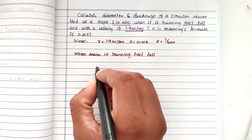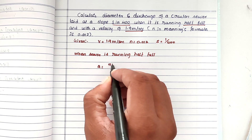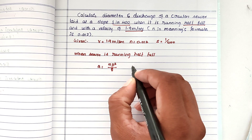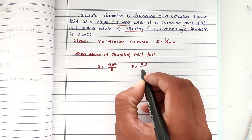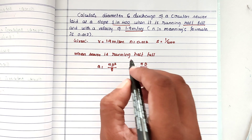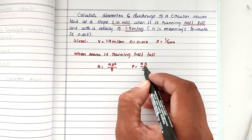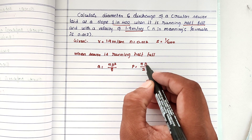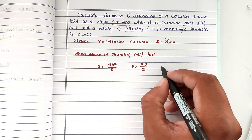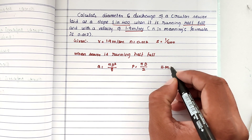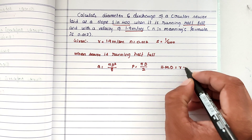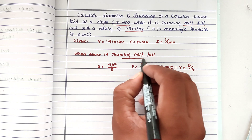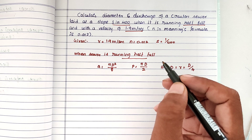For a circular sewer running half full, the area of section A = πd²/8. The wetted perimeter P = πd/2. When running full, the perimeter is πd. The hydraulic mean depth, HMD, is r = d/4. These are the key geometric values for a half-full sewer.